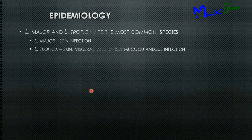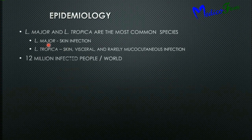Different species of Leishmania cause different forms of disease. Leishmania major and Leishmania tropica are the two main species. Among these, Leishmania major infects the skin, while Leishmania tropica infects the skin, viscera, and rarely the mucocutaneous layer.